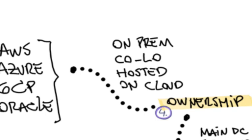Who will own this infrastructure? Will it be ours? Will it be co-located in some place? If it's a cloud, we have several options to choose from.